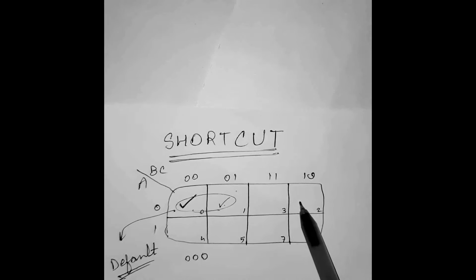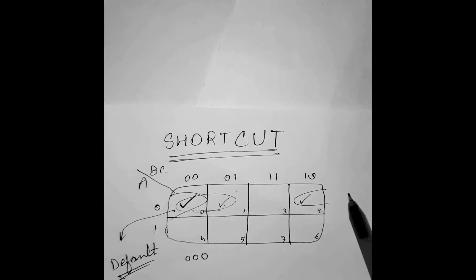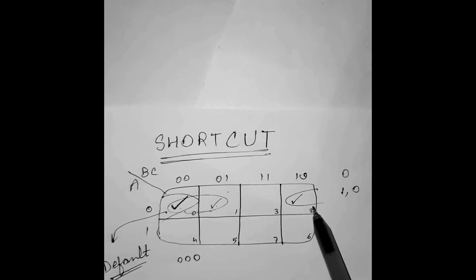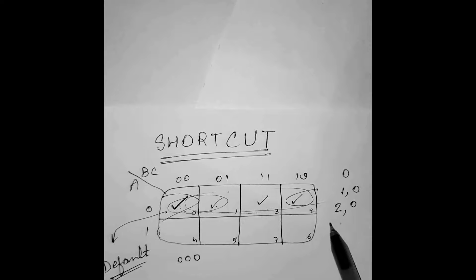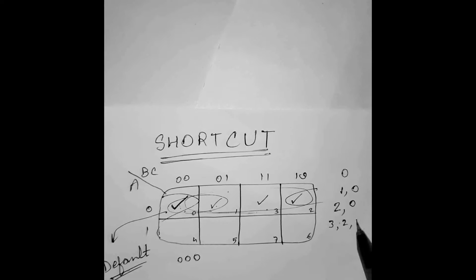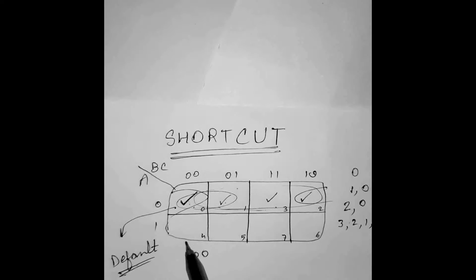For G2, this and this default. So the terms will come. For G0, it will be 0. For G1, it will be 1, 0. For G2, it will be 2, 0. For G4, this is default. Form a pair. It will be 4, 0.